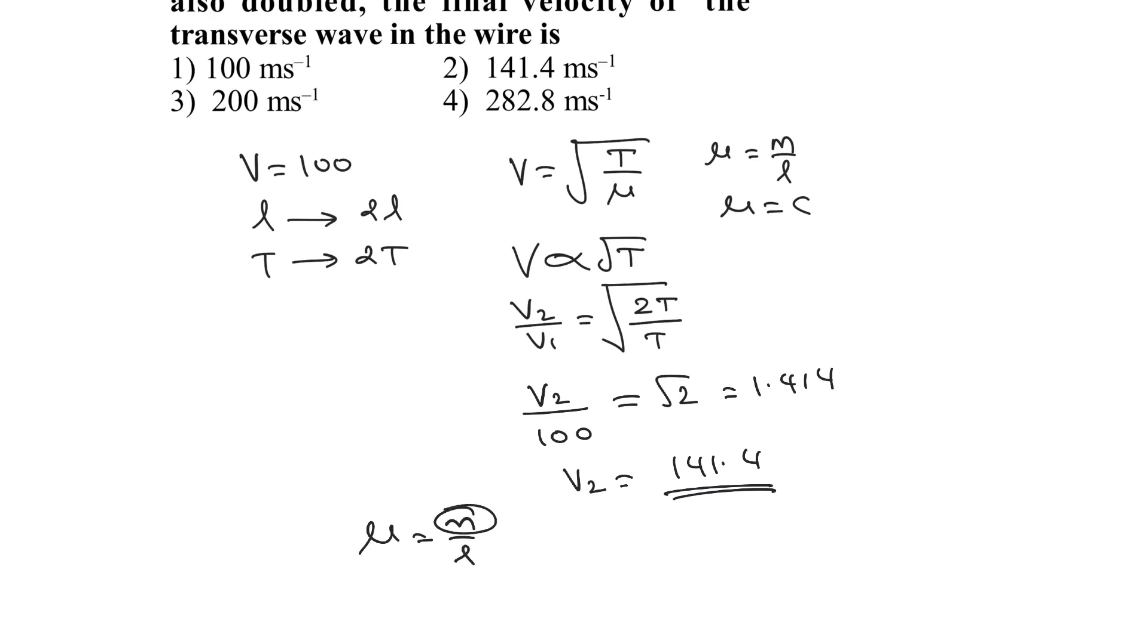If you keep mass M constant and change the length L, then linear mass density will change. But if you are using additional wire, then both mass and length increase proportionally, so linear mass density remains the same.